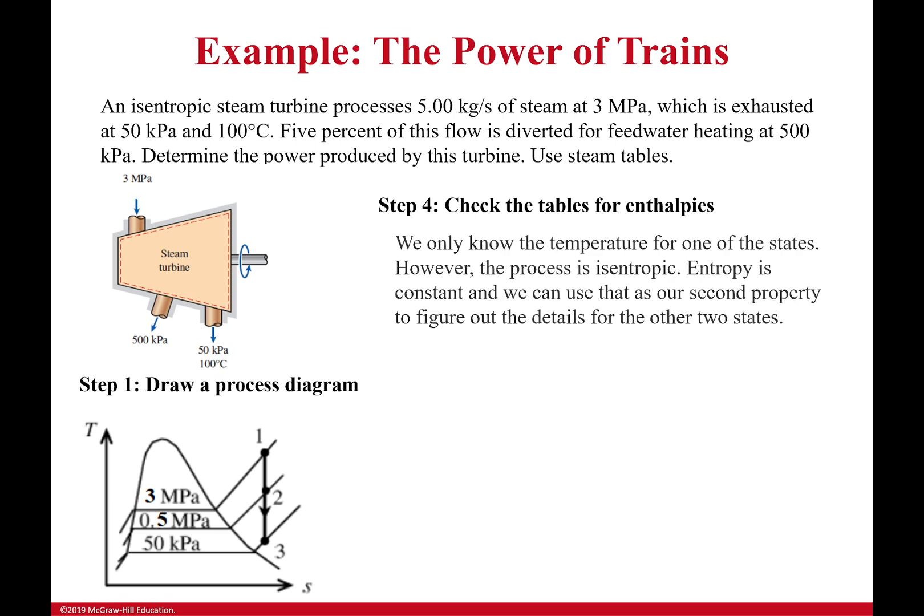We're going to check the tables for the enthalpies. Now, we only know the temperature for one of the states. The process is isentropic, which means that entropy is constant, and that means that entropy is our second property. So we're going to use that to find all the details for the other two states. Because if I know pressure and I know entropy, I know enough to put those states in their place. The bottom guy right here, I can get the entropy from it. So we start at the bottom because we know enough there. We have a pressure, we have a temperature.